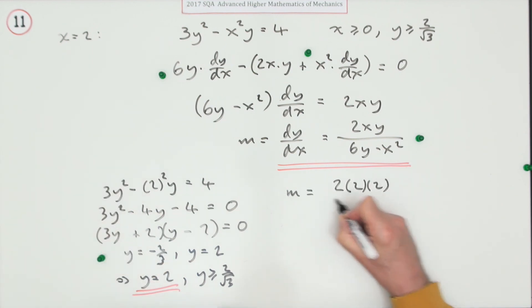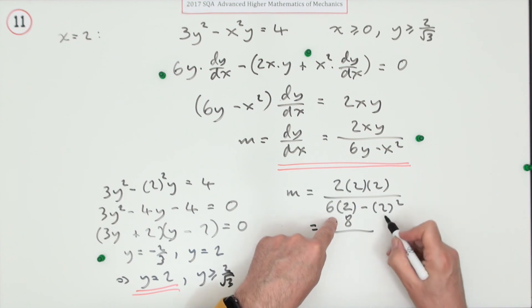Divided by 6(2) - (2)^2. That's 8/(12-4) = 8/8 = 1. The gradient is 1 for the final mark.